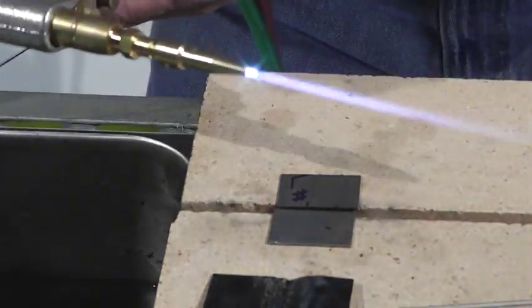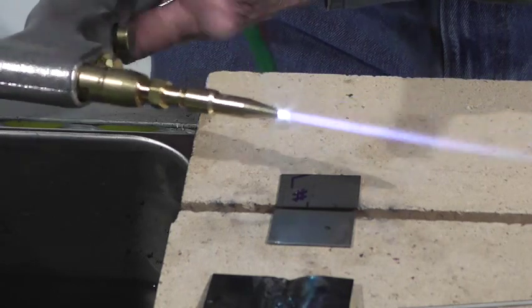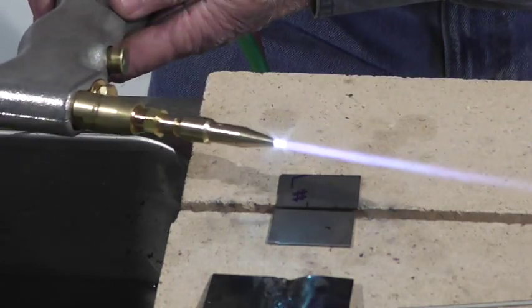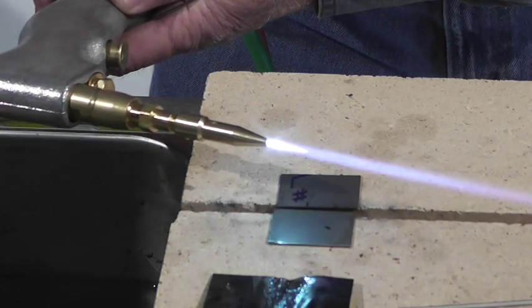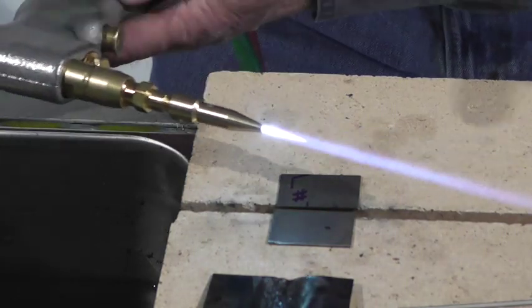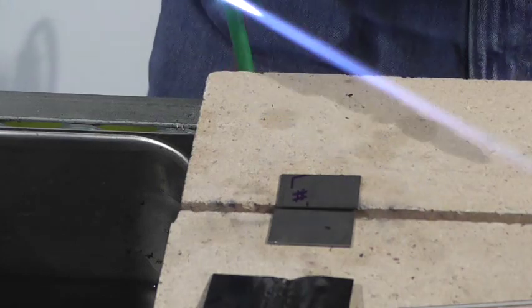Now when you weld steel, any other metal but stainless, use a neutral flame. For stainless, use a carburizing flame. All that means is that you're using a little bit more acetylene, so you run that flame out about two to three times longer than that little inner cone.